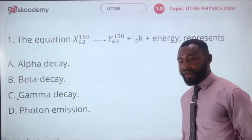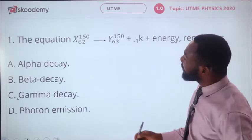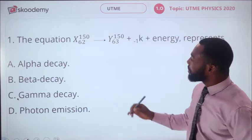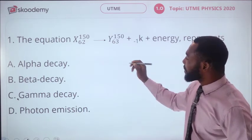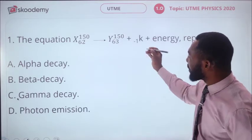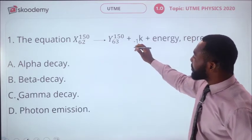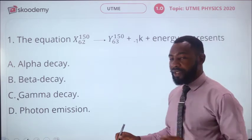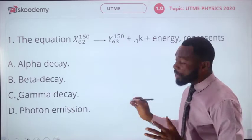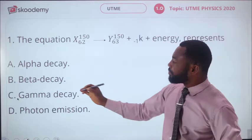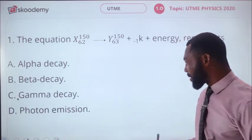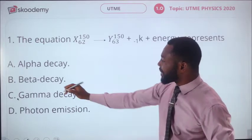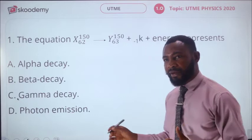We have this very simple question: the equation X power 150 subscript 62 equals Y 63 and 150 plus K subscript minus 1 plus energy represents which type of decay? Options are: A, alpha decay; B, beta decay; C, gamma decay; D, photon emission. The correct answer is beta decay.